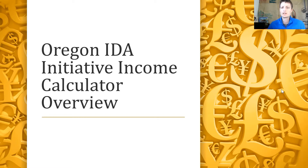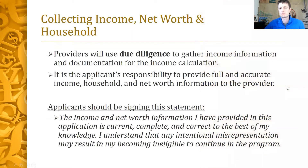We know that calculating income can be different for each household and is based on a lot of different factors, so we hope this addresses most of the questions that may come up. Providers will use due diligence to gather information and documentation for IDA eligibility. It's the applicant's responsibility to provide full and accurate information. Applicants should be signing a self-certification statement that you see on the screen. In the end, it's the applicant's responsibility to be truthful — you report what you know. We want the relationship with the applicant from the onset to be one of trust and collaboration rather than suspicion of fraud.